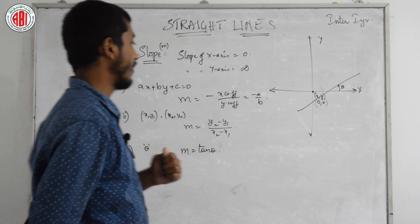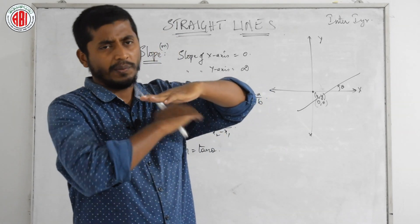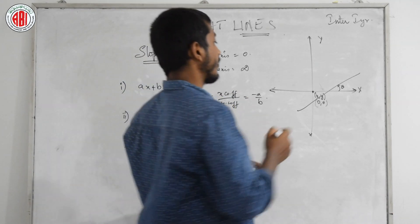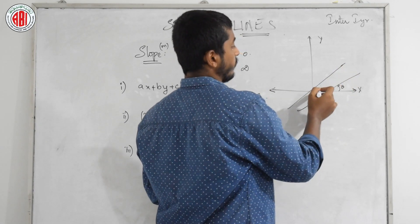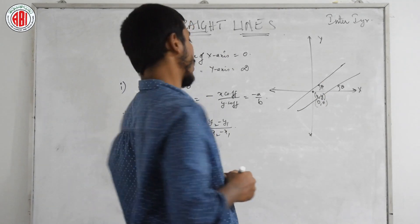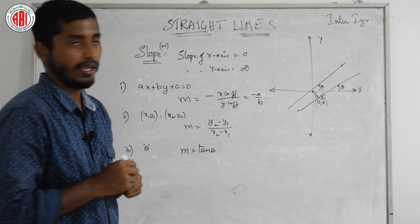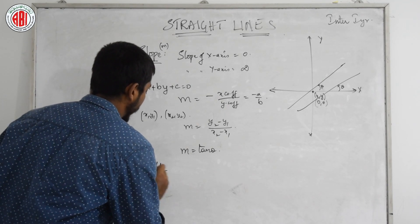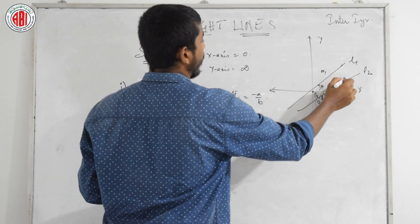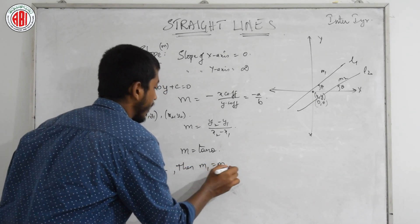What happens if two lines are parallel? If two lines are parallel, they make the same angle with the x-axis, so tan θ will be the same for both. We can conclude that the slopes are equal for two parallel lines. If L1 is parallel to L2, with slopes M1 and M2 respectively, then M1 = M2.